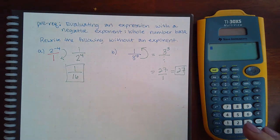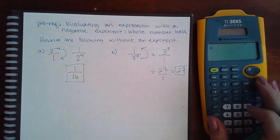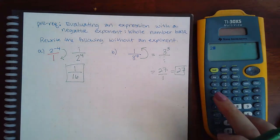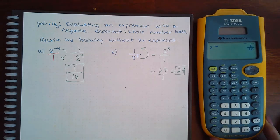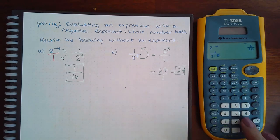Now your calculator does do these problems for you. So if I write two raised to the negative four, it will tell me it's one over 16. If I do one over three raised to the negative three, it will tell me that it's 27.